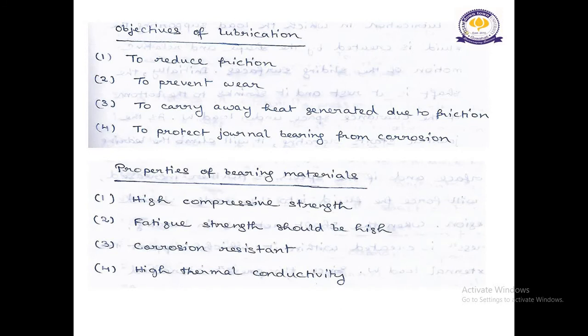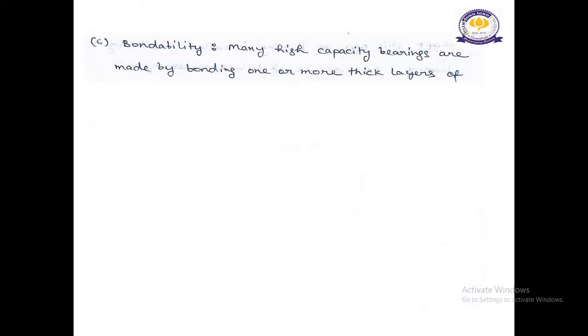We move on to Properties of Bearing Materials. Number one, is High Compressive Strength, number two, Fatigue Strength should be High, number three, Corrosion Resistant, number four, High Thermal Conductivity, number five, Lower Coefficient of Thermal Expansion, Number six, Bondability, many High Capacity Bearing are made by bonding one or multi-layers of bearing materials to a high-strength steel shell.